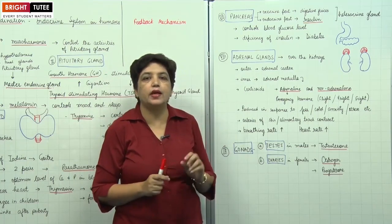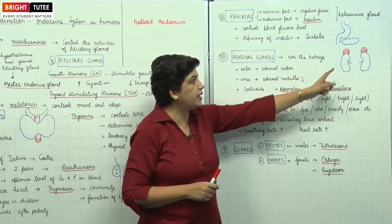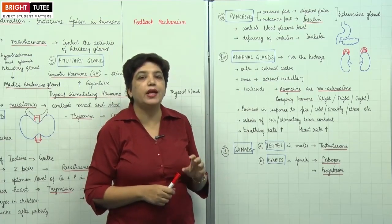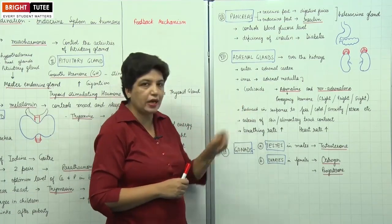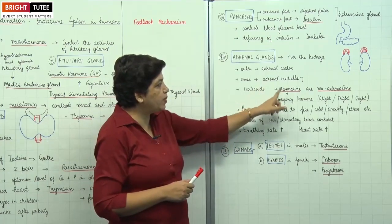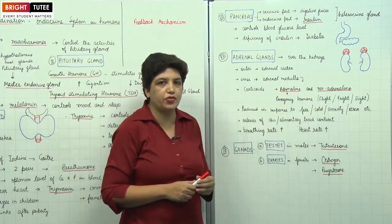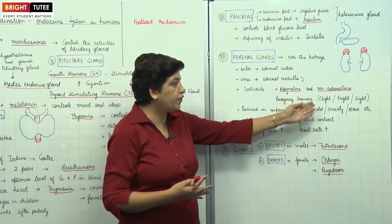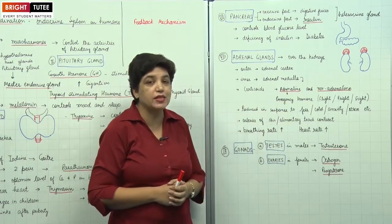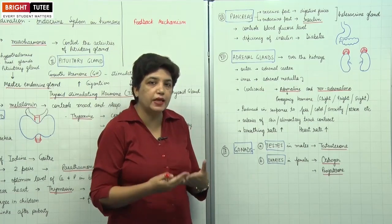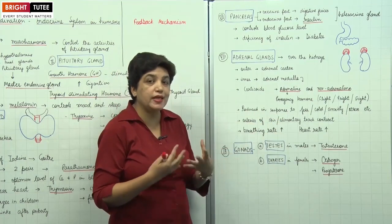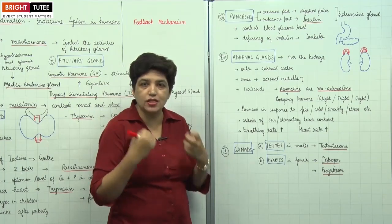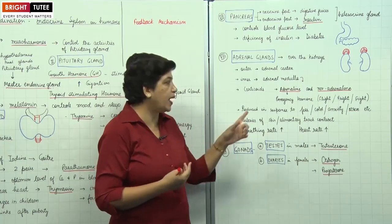The next gland is the adrenal gland — two pyramid-shaped glands present over the kidneys. The outer part is the adrenal cortex and the inner part is the adrenal medulla. They release three hormones together known as corticoids. Two important hormones released by the adrenal medulla are adrenaline and noradrenaline. Adrenaline is known as the emergency hormone — it enables animals to decide for flight, fight, or fright. More adrenaline is secreted in response to fear, cold, anxiety, or emotional stress. If you are stressed, your heart rate increases and you start sweating — all these responses are produced by adrenaline.